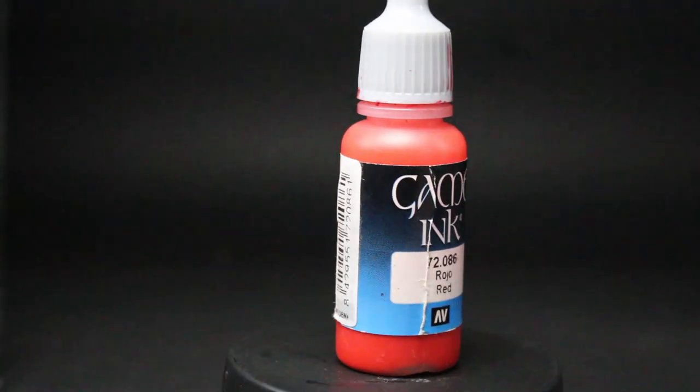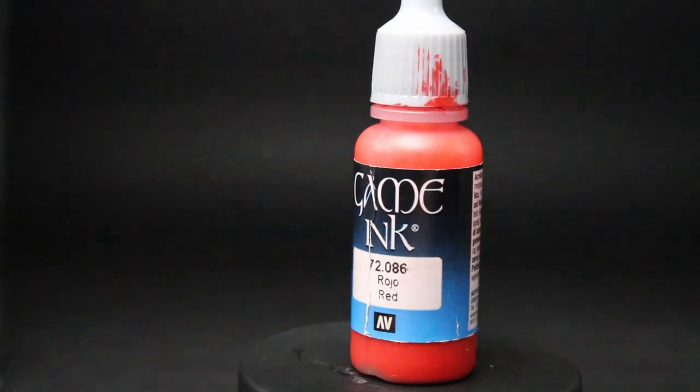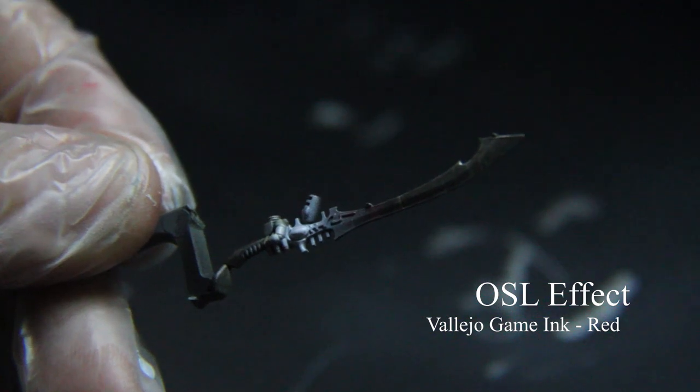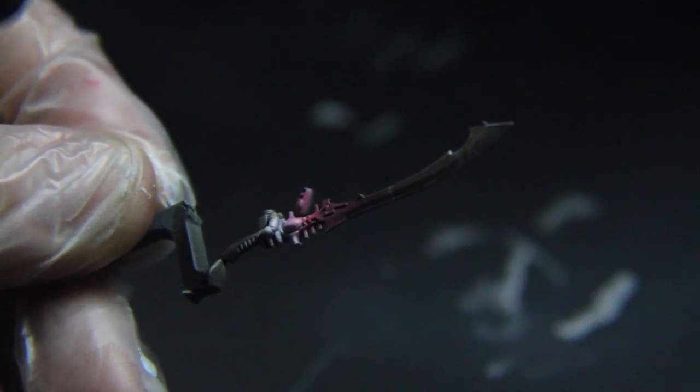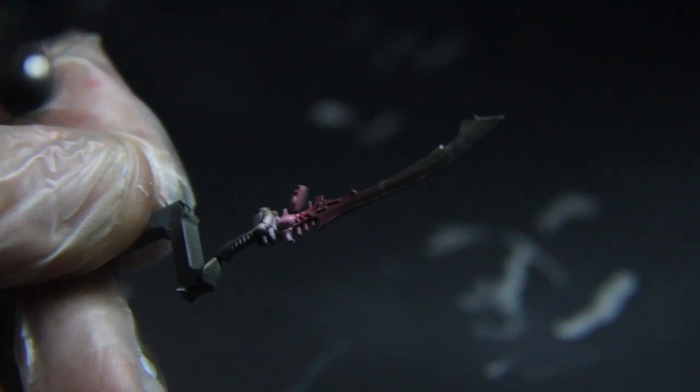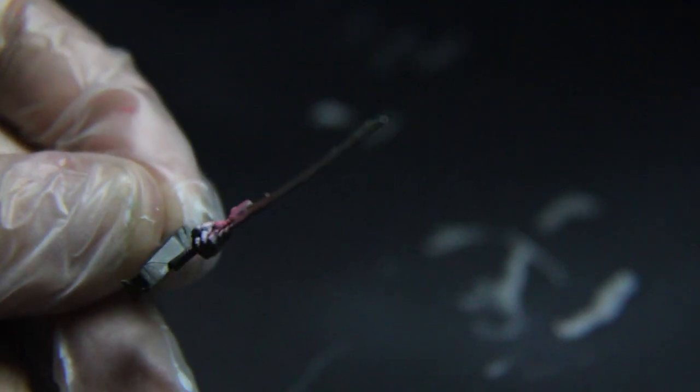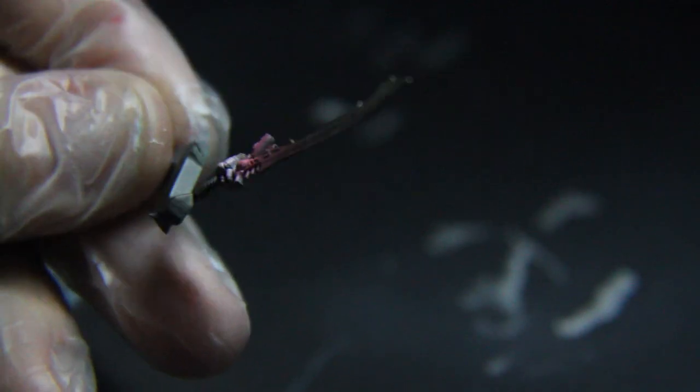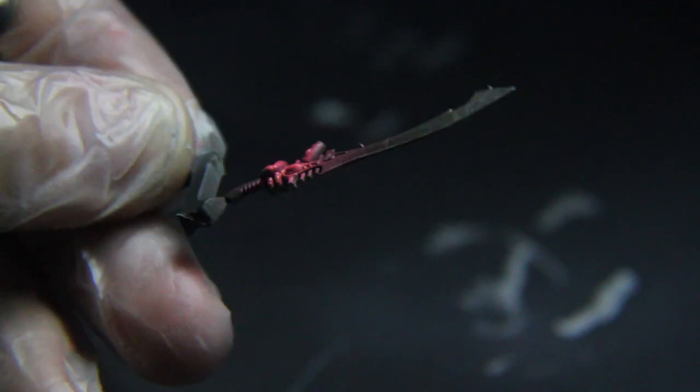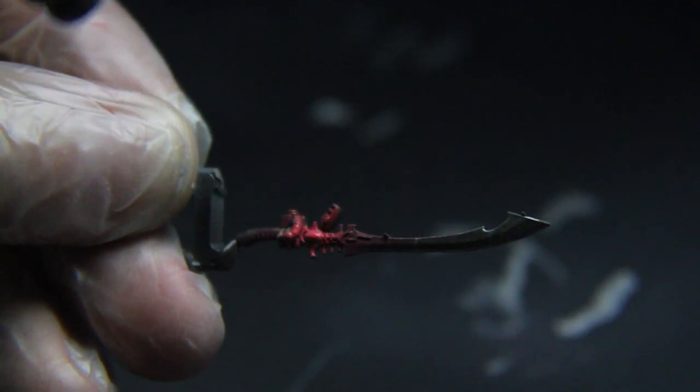Now clean out your airbrush and, with thinner and Vallejo red ink at a ratio of 2 to 1, glaze over the white we just laid down. Use several layers and build the color over the areas that have white on and overlap the non-white areas only a little. Make sure the red is very vivid at the end. You want this to pop.